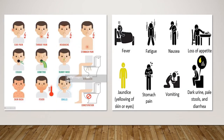The assumption behind the theory is that there are sufficient cohesions among symptoms to warrant a theory. The Theory of Unpleasant Symptoms attempts to achieve parsimony by proposing that some of the same factors may influence the experience of several different symptoms. Consequently, similar interventions may be effective in alleviating more than one symptom.